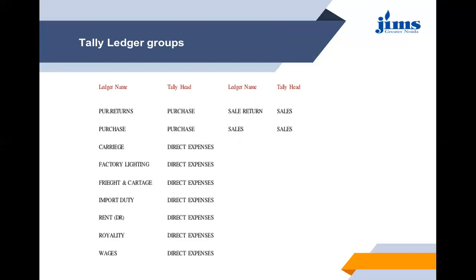Factory lighting is also categorized under direct expenses. Trade and cartage is defined under direct expenses. Import duties are also categorized under direct expenses. Import duty, rent, royalty, and wages — these are all created under the direct expenses ledger. We can create single ledgers, or we can group them under the direct expenses head and maintain a group of ledgers together.